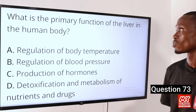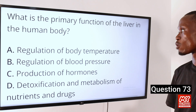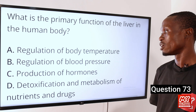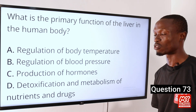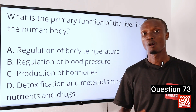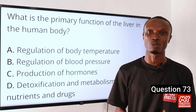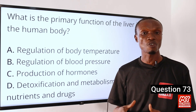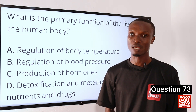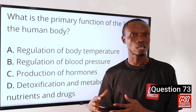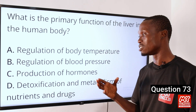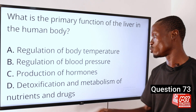Question 73: What is the primary function of the liver in the human body? A: Regulation of body temperature. B: Regulation of blood pressure. C: Production of hormones. D: Detoxification and metabolism of nutrients and drugs. The liver is a vital organ with multiple functions, but its primary function is detoxification and metabolism of nutrients and drugs. It detoxifies harmful substances such as drugs and toxins by breaking them down into less harmful substances that can be eliminated from the body. So option D is the correct option.